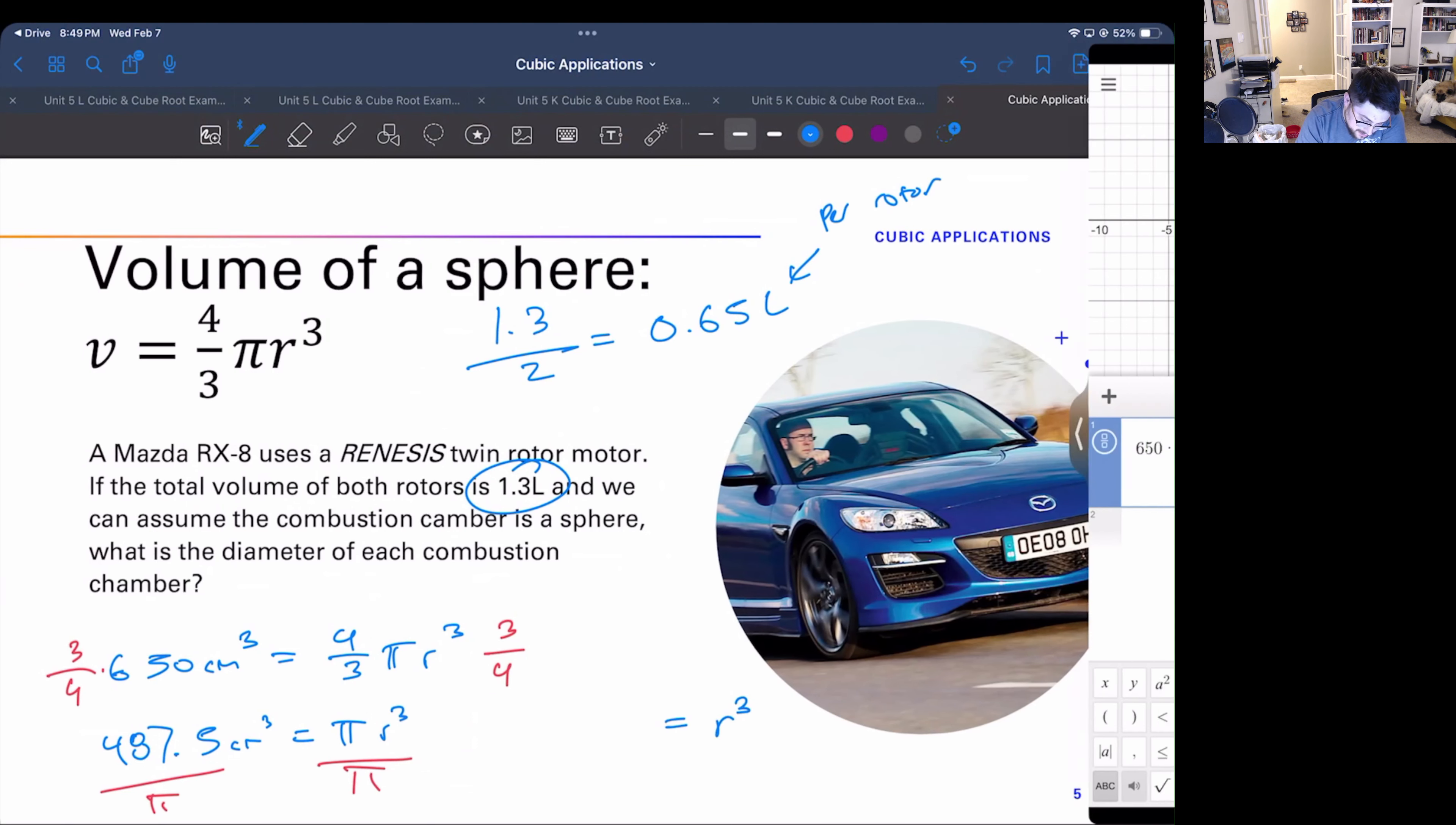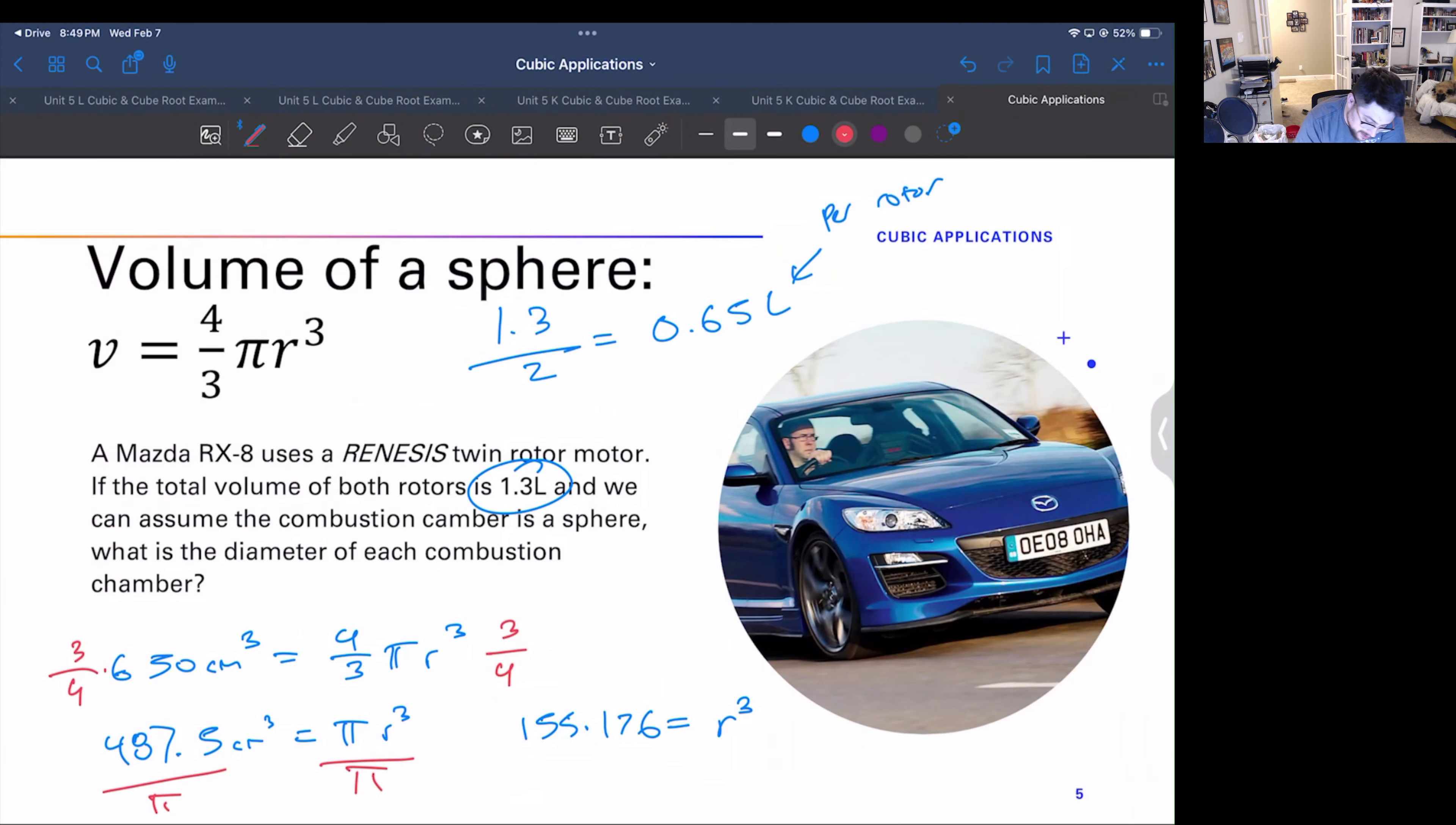What's on the left? Well, let's take all this and, 487.5 divided by pi, okay, we have 155.176. Alright, now to get rid of that whole cube thing, let's cube root, cube root, and what we would end up with, the radius equals...